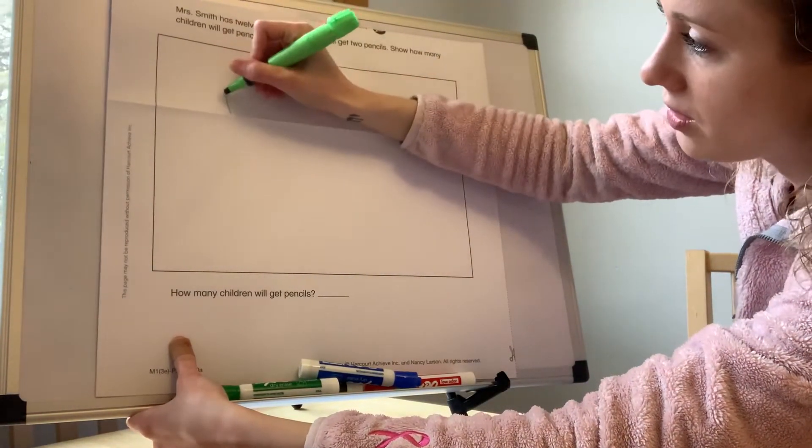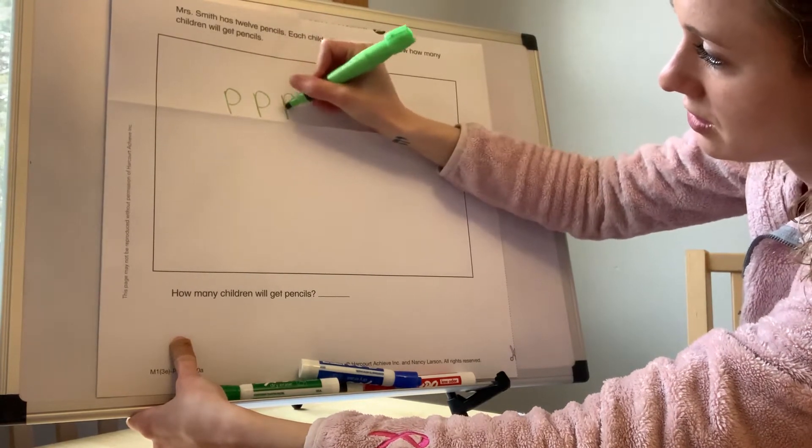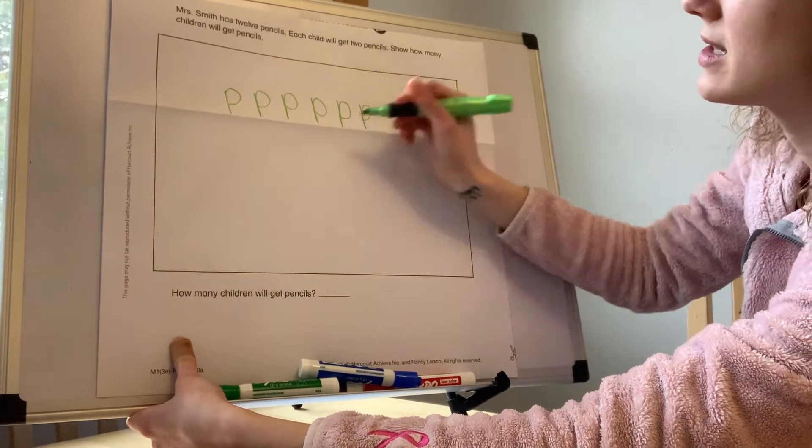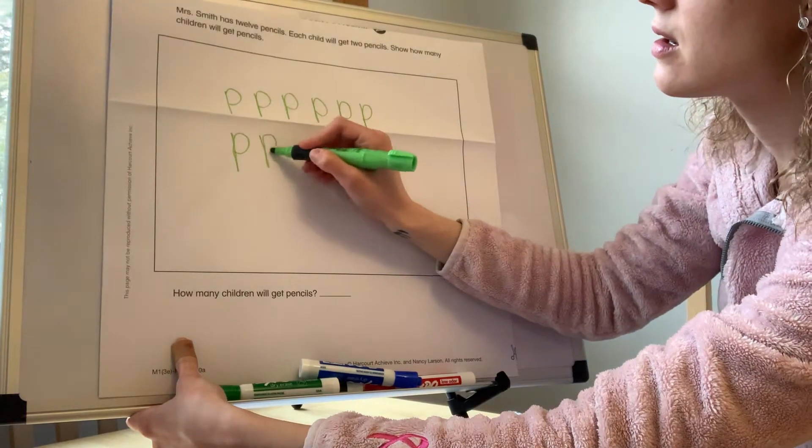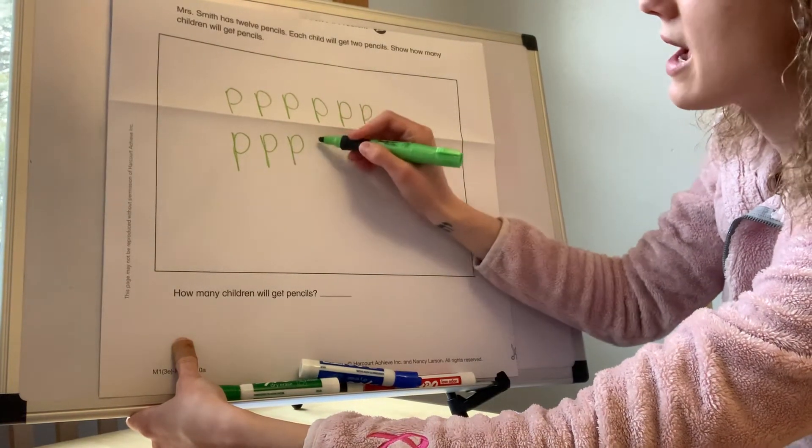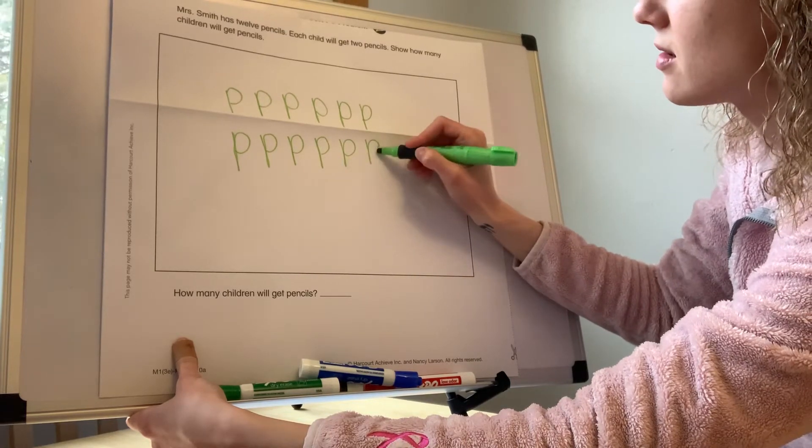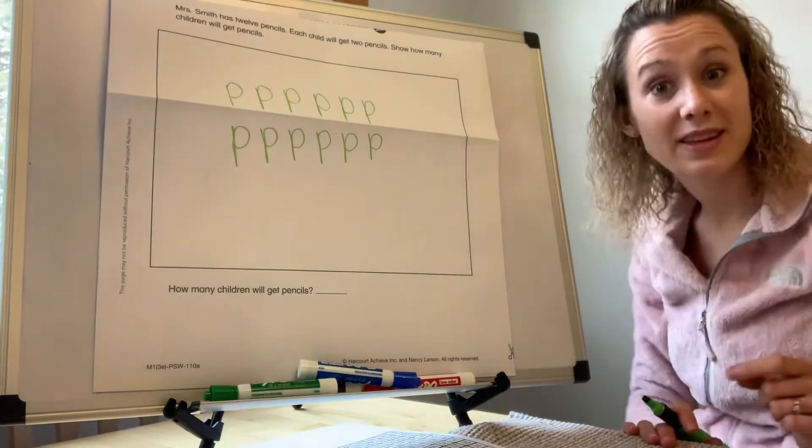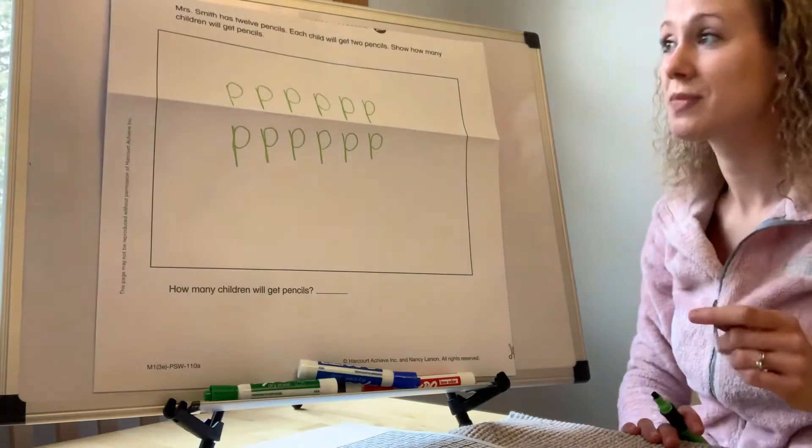So 1, 2, 3, 4, 5, 6, 7, 8, 9, 10, 11, 12. 6 plus 6 makes 12. So I have 6 on the top and 6 right under.